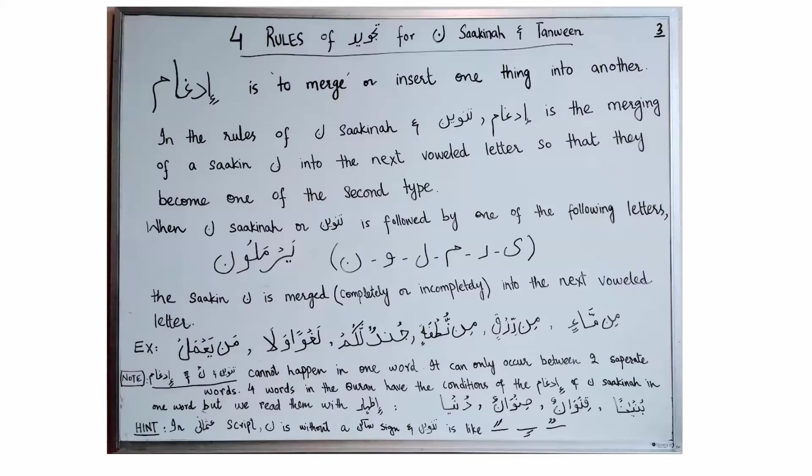Whenever Noon Sakina or Tanween is followed by the Yermalun letters — Ya, Ra, Mim, Lam, Waw, or Noon — the Sakin Noon, or the Sakin Noon hidden in Tanween, either completely or incompletely merges into one of these letters. We can see some examples right here.